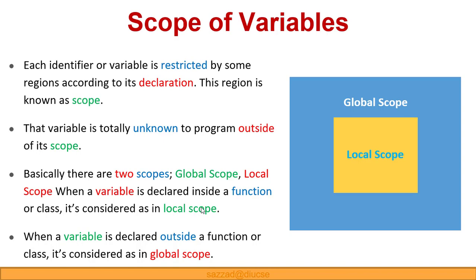Today we are going to discover the scope of variables and the standard library of Python. So let us begin. Scope of variables — as we know, whatever programming language we are dealing with, there will be two kinds of variables: mainly local and global. Each identifier and variable is restricted by some region according to its declaration, and this region is called scope.